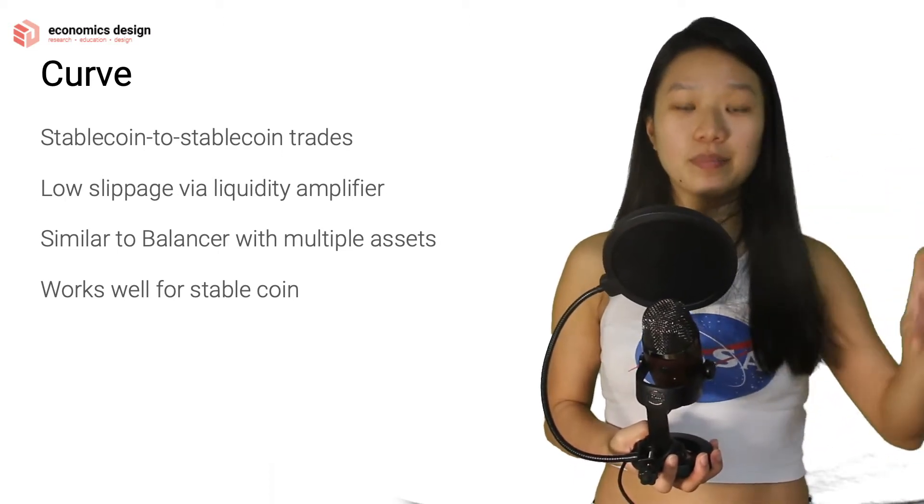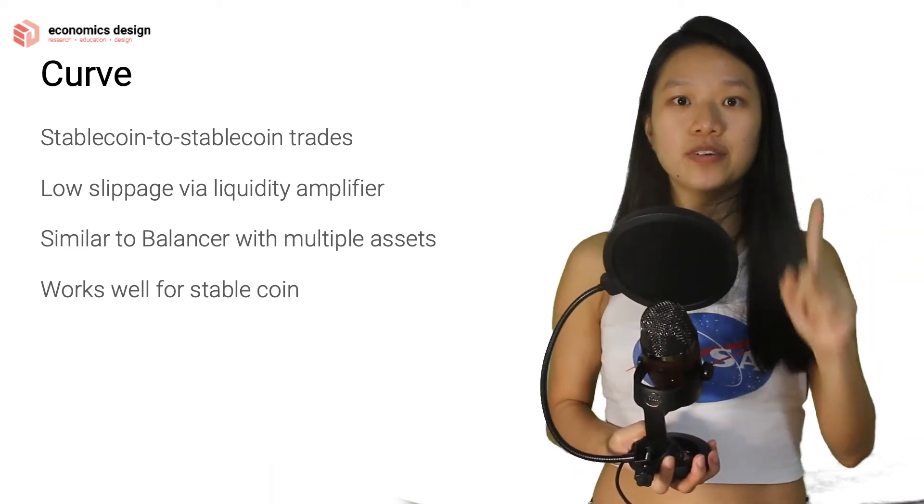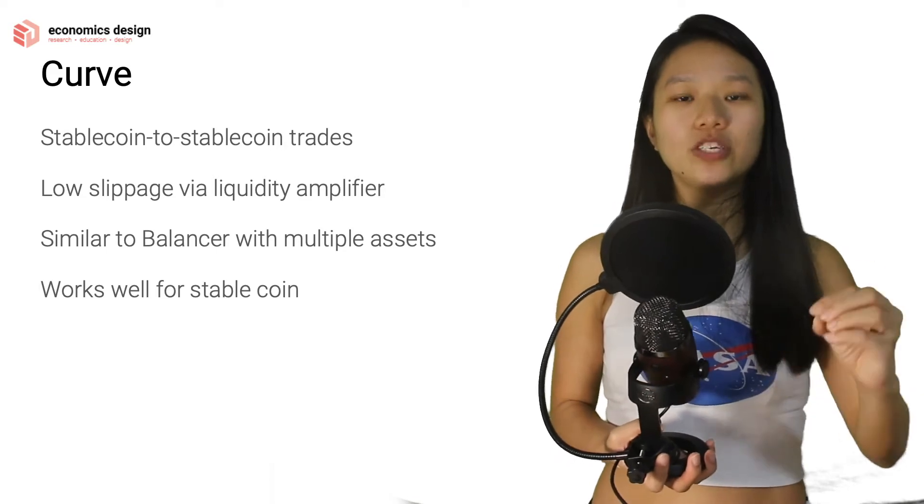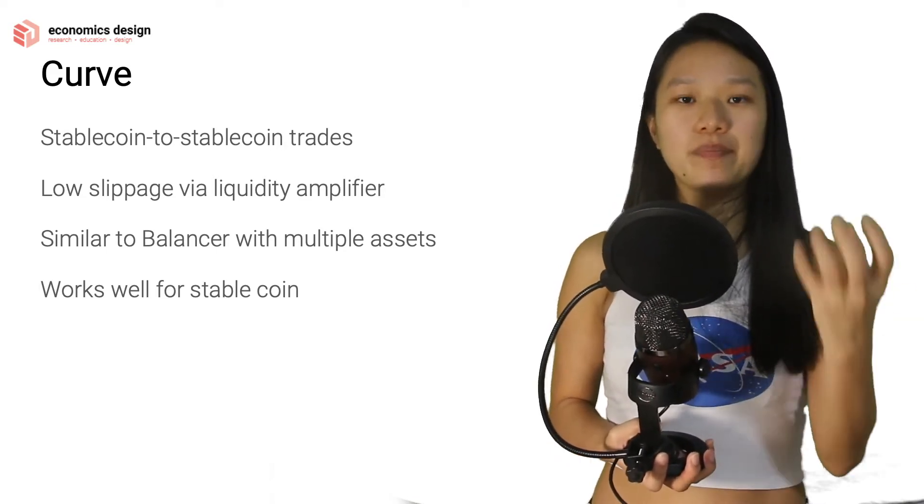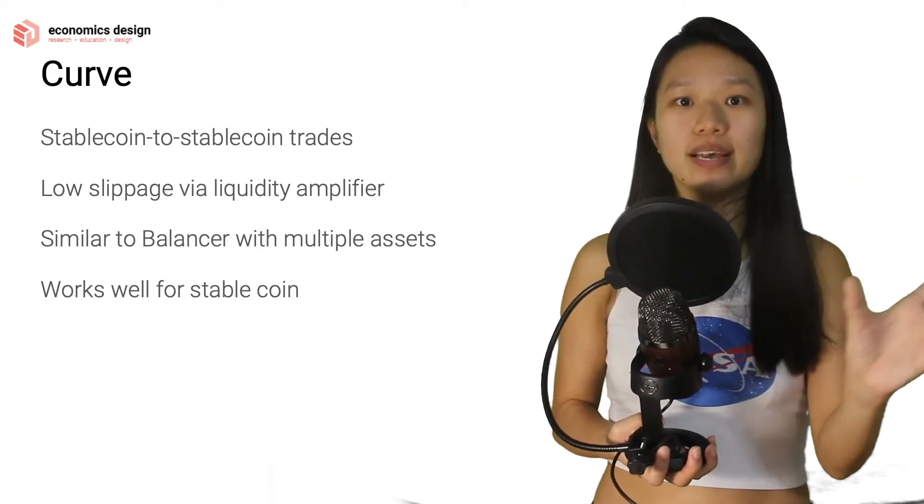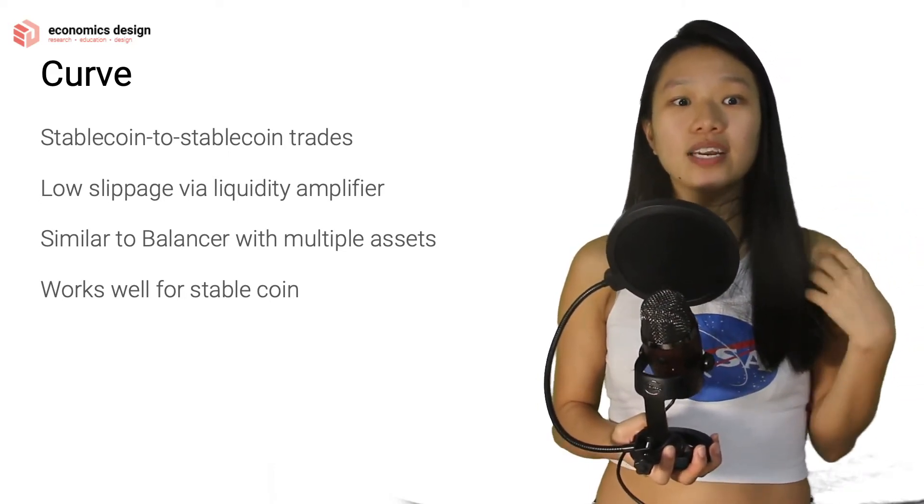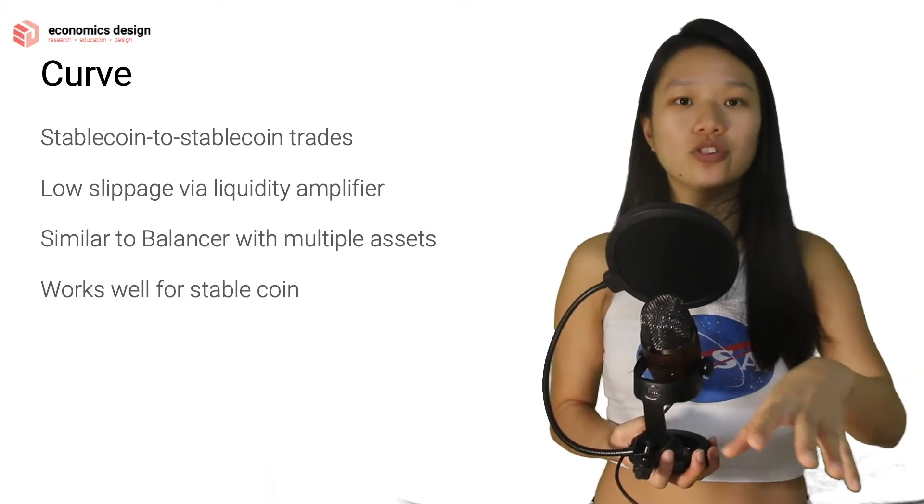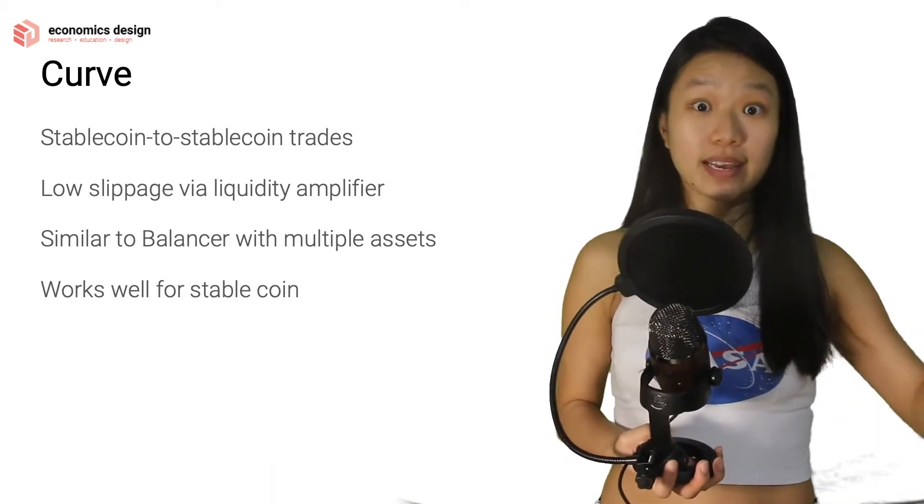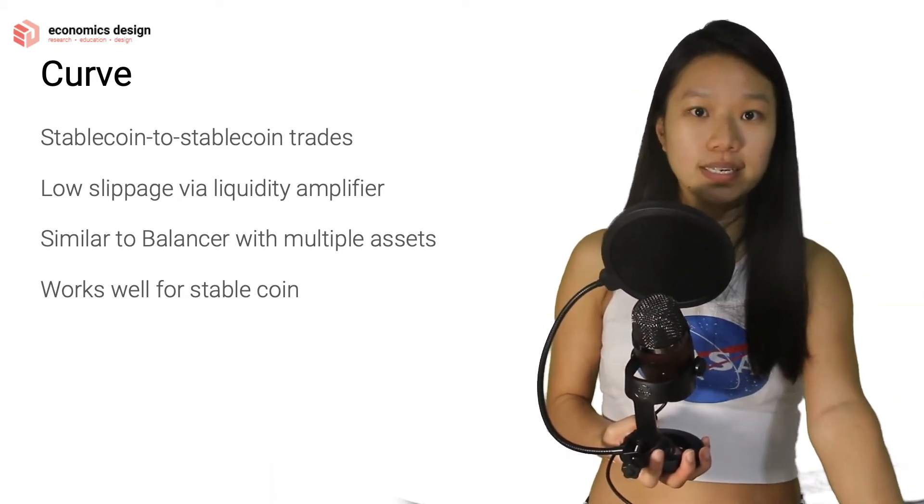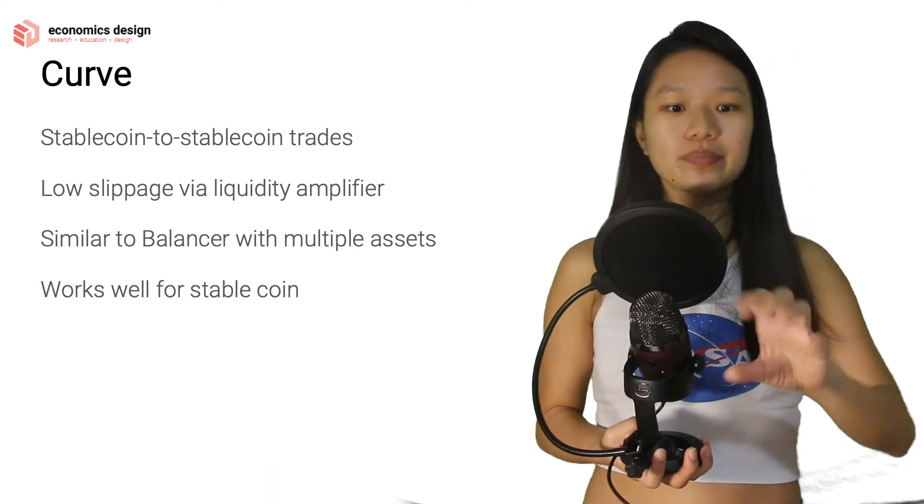So Curve basically does similar stuff as Bancor but the difference is that they only trade assets with almost similar or same valuation. So if I have USDT and I don't want USDT, I want DAI, I can go to Curve, go to the picnic basket and say okay I'll give you USDT and give me your DAI. So that's what it does.